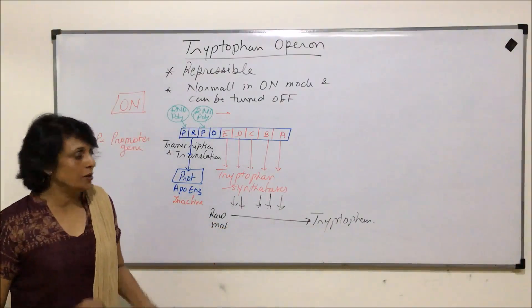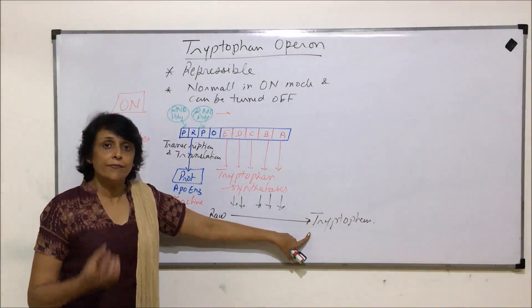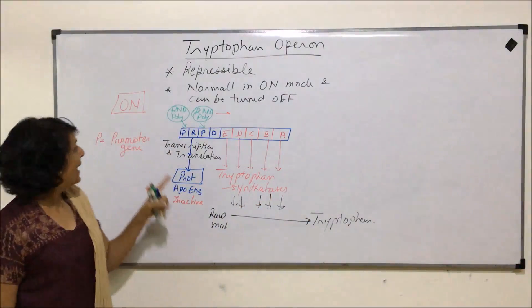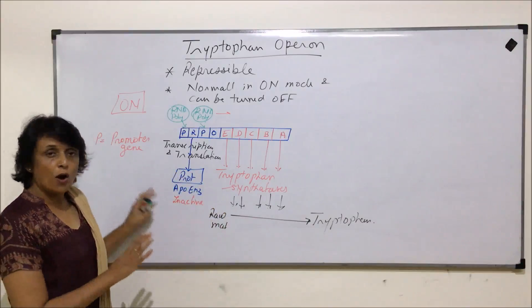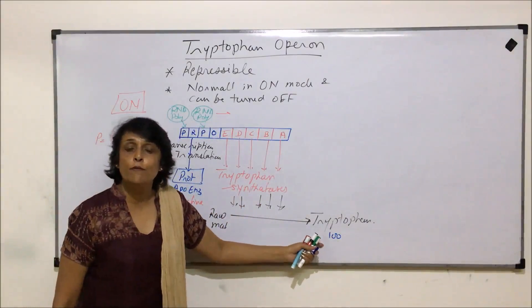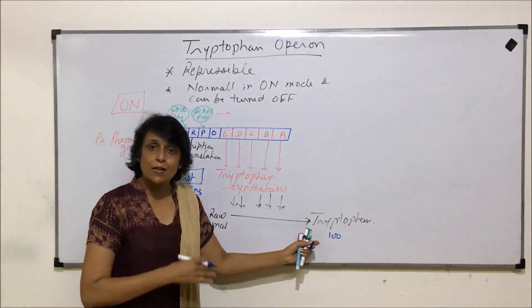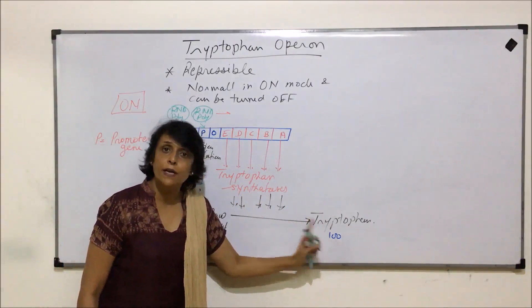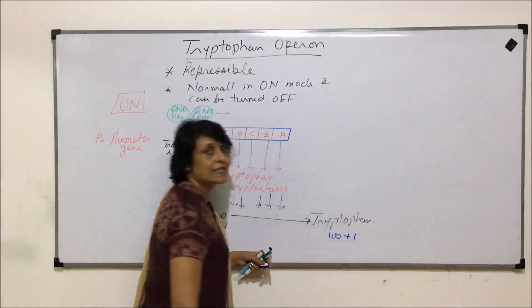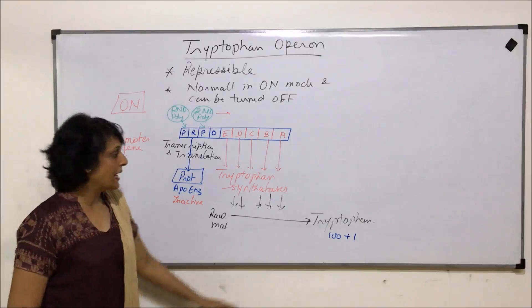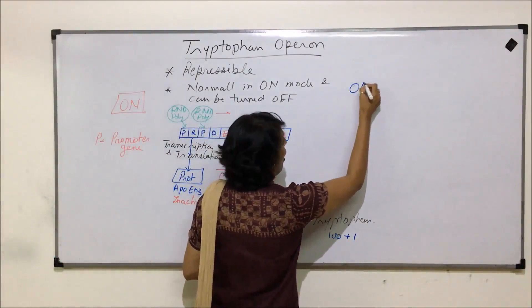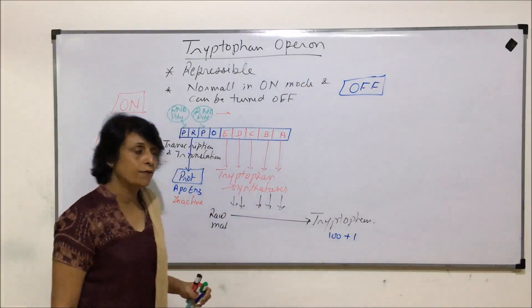There is a rare situation where tryptophan concentration may exceed the required concentration. If that happens, synthesis needs to be stopped and that is when this operon will be turned off. For example, if at any given time 100 tryptophan molecules must be present in the cell, the process runs to maintain that number. But if there is one extra molecule or a few extra molecules, the cell does not require those extra tryptophan, so they should be turned off.